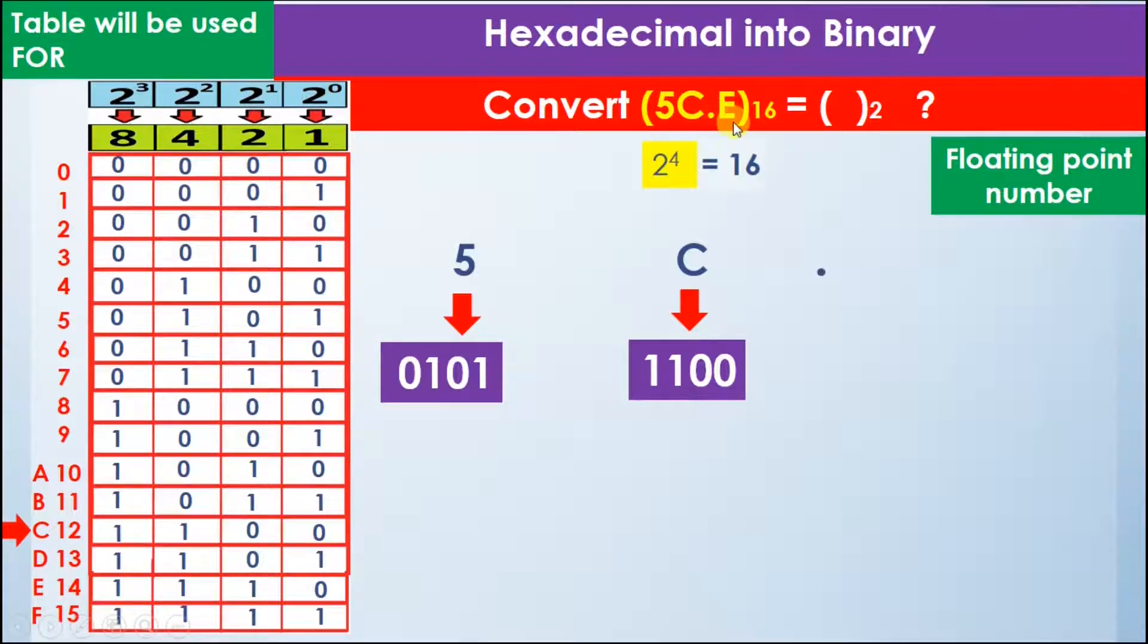The next digit we have is E, so now we will find E in the table. Where is the letter E in the table? Here is the letter E, and we know that E is 14.